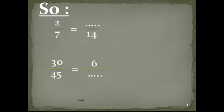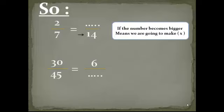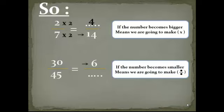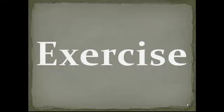Here we have 2 over 7 equal space over 14. If the number becomes bigger, we are going to multiply. 7 becomes 14, so we multiply by 2 down and multiply by 2 up: 2 by 2 equals 4. For 30 over 45 equal 6 over space, the number becomes smaller, so we divide. 30 becomes 6, so we divide by 5. We divide 5 up and 5 down: 45 divided by 5 equals 9.